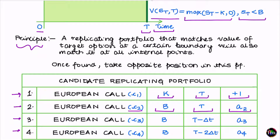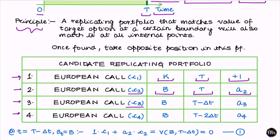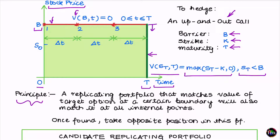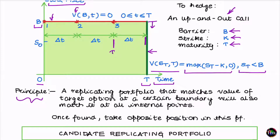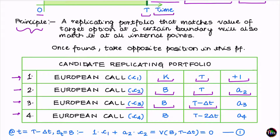The number of units of C2 I need, call it a2, is unknown for now. I also take a position in another European call C3, whose strike is also B but whose maturity is T minus delta-t. My third option C4 has strike B and expires at T minus 2·delta-t. So in total, my replicating portfolio consists of: one European call C1 at strike K and maturity T for the green boundary, plus three options C2, C3, C4 all at strike B with maturities T, T minus delta-t, and T minus 2·delta-t respectively, for the red boundary.